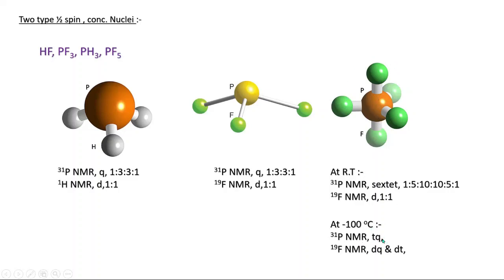For the three equatorial fluorines, due to phosphorus we get a doublet, and due to the two axial fluorines we get a triplet — so the equatorial fluorines give a doublet of triplet. For the two axial fluorines, due to phosphorus we get a doublet, and due to the three equatorial fluorine atoms we get a quartet — so the two axial fluorines give a doublet of quartet. This is the fluorine-19 NMR at low temperature.